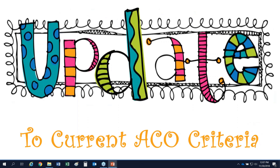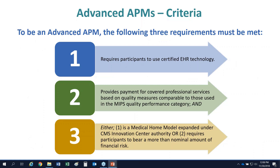Let's look at the criteria CMS has had in place for advanced APMs and how those changed in the final rule for 2019. The three basic requirements to be an advanced APM are: the APM must require the use of certified technology, payments must be linked to quality (pay for performance), and there must be some risk-bearing aspect either under a medical home model or the standardized risk model.